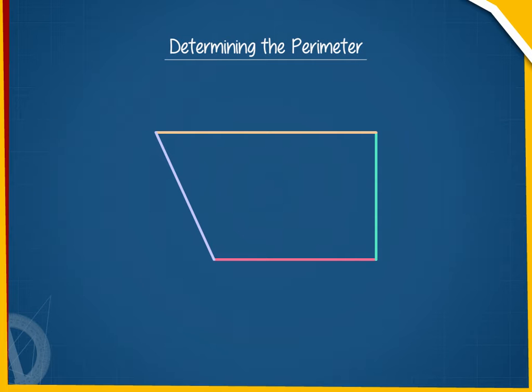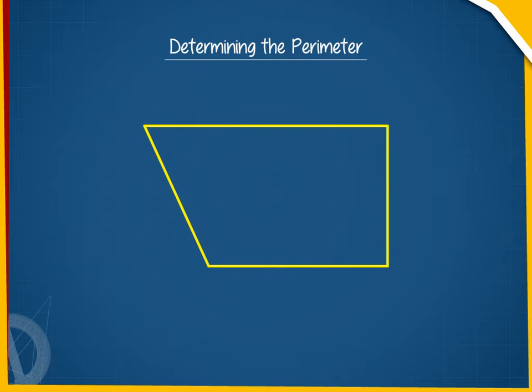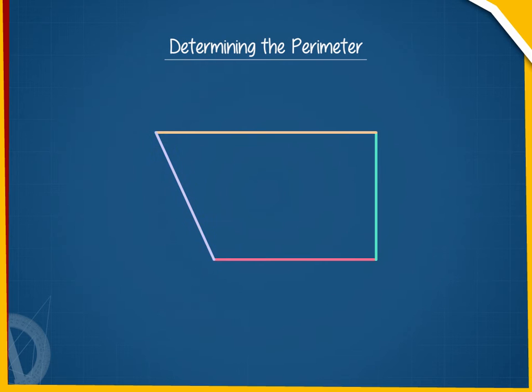Perimeter is the length of the boundary of a simple closed figure. Suppose we have a figure that is not a curve and its sides are straight. If you want to calculate the perimeter, we will simply add up the lengths of all the sides.